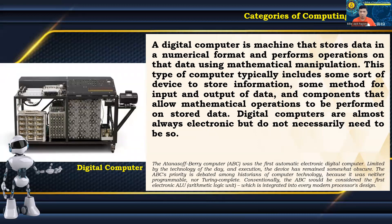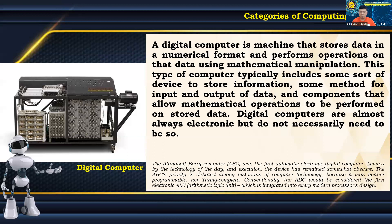A digital computer is a machine that stores data in a numerical format and performs operations on that data using mathematical manipulation. It typically includes a device to store information, methods for input and output of data, and components that allow mathematical operations to be performed on stored data. The Atanasoff-Berry computer was the first automatic electronic digital computer. The ABC's priority is debated among historians because it was neither programmable nor Turing complete; however, it would conventionally be considered the first electronic arithmetic logic unit, integrated into every modern processor's design.